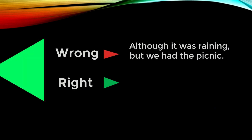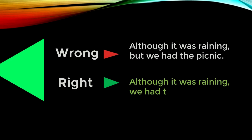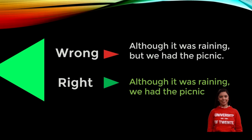'Although it was raining but we had the picnic' — as far as I know, 'although' has the same meaning as 'but,' so it is quite odd to use them together in one sentence. For example, 'Although she's very beautiful but selfish.' It is better to leave out one of them: 'She's very beautiful but selfish.' So the corrected sentence becomes: 'Although it was raining, we had the picnic.'